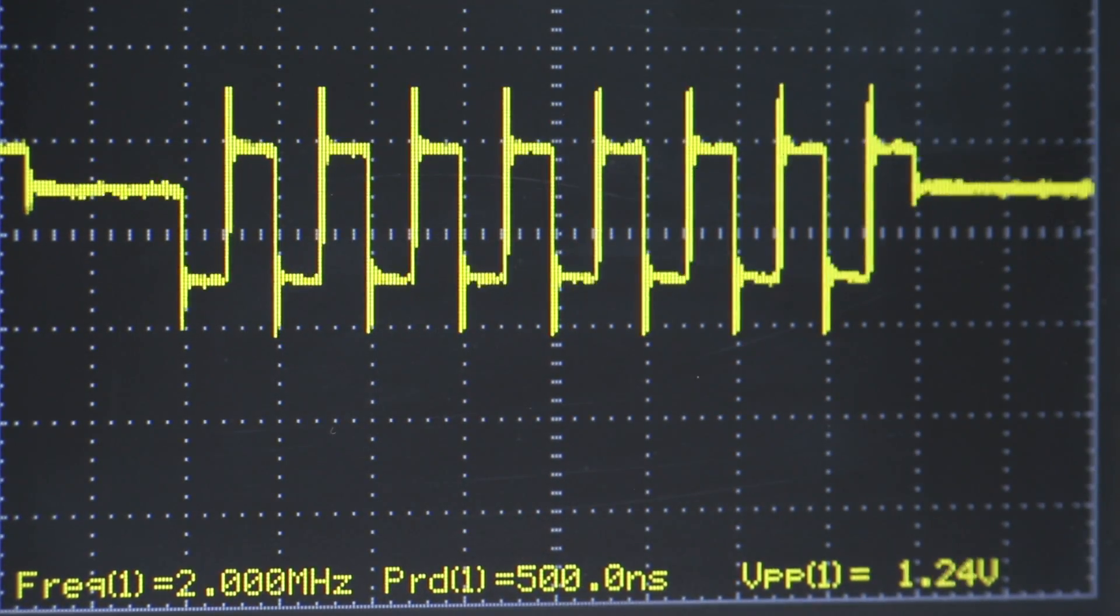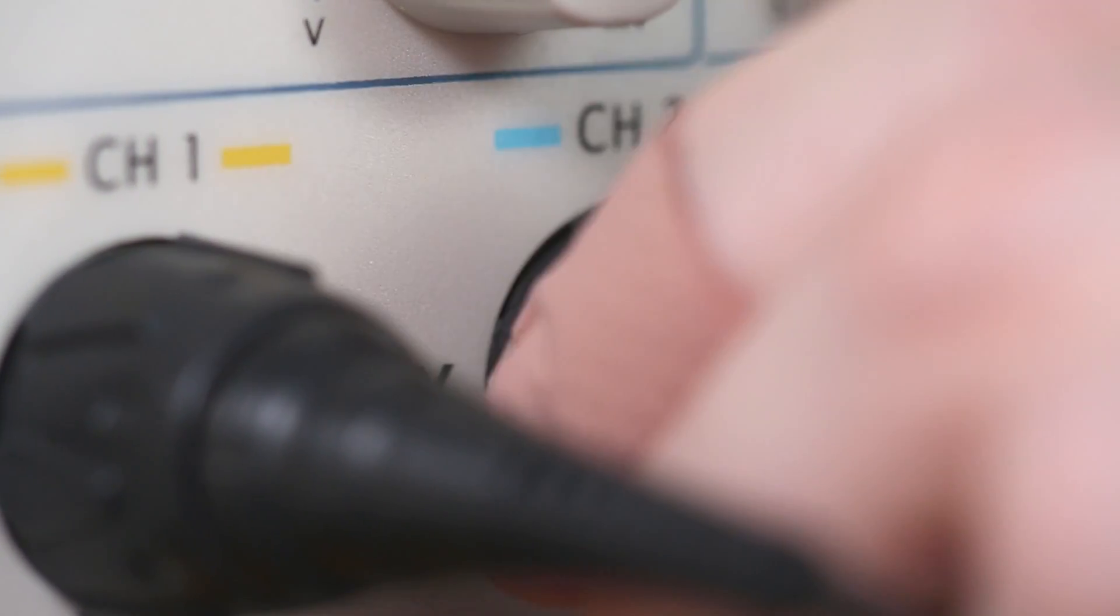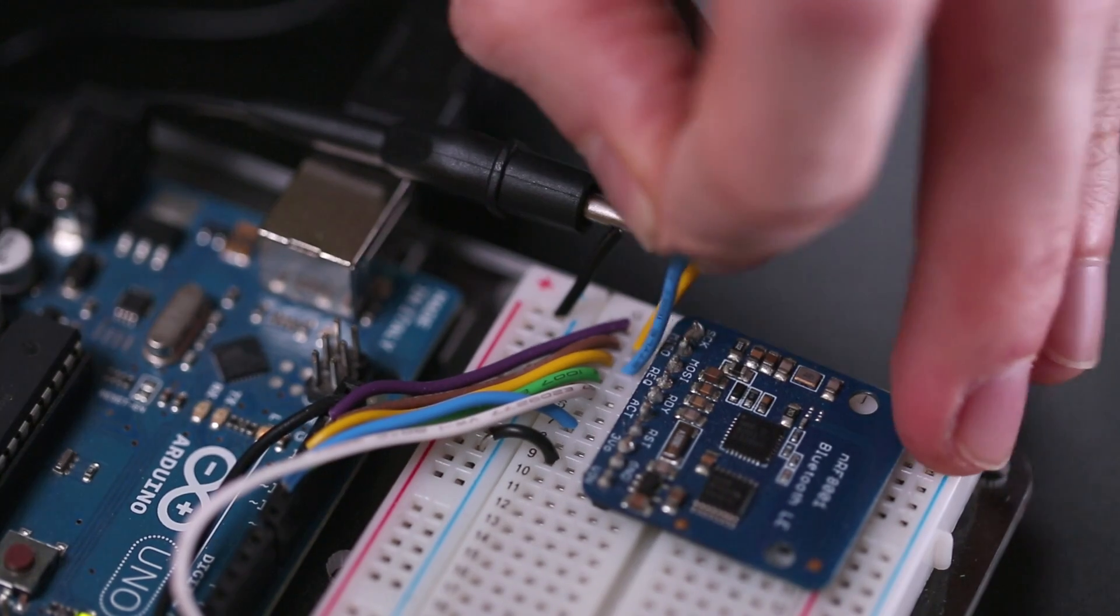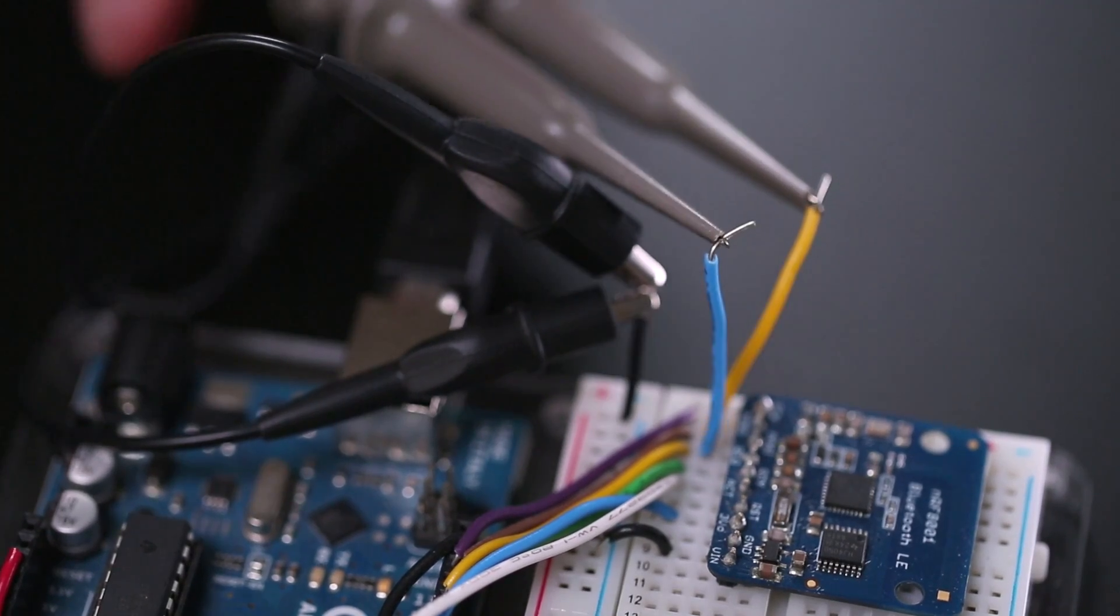Now I can see the actual binary data being sent out to the board. And because my scope has two channels, I can use an additional probe to simultaneously view the data being sent from the Bluefruit board.